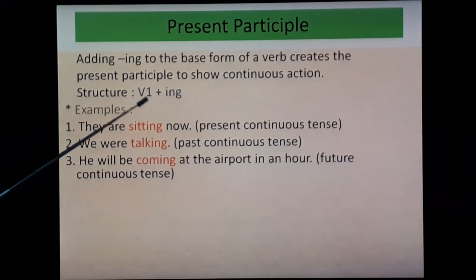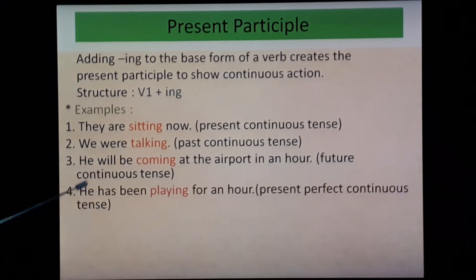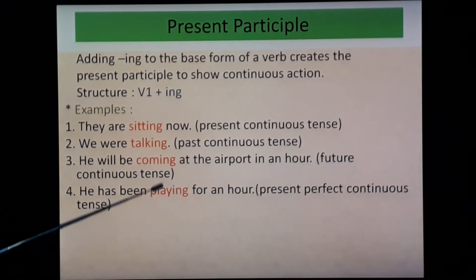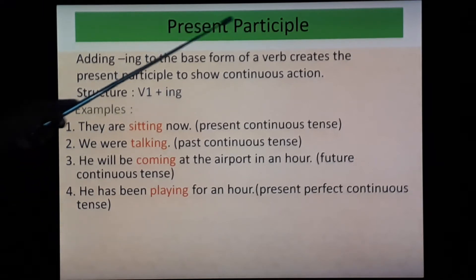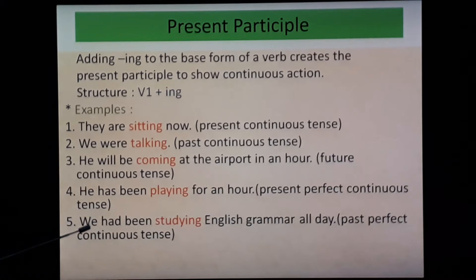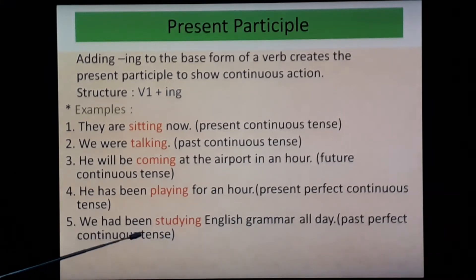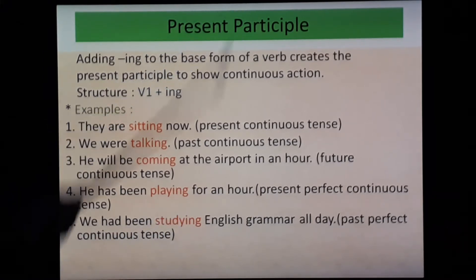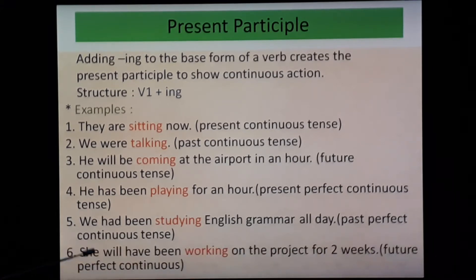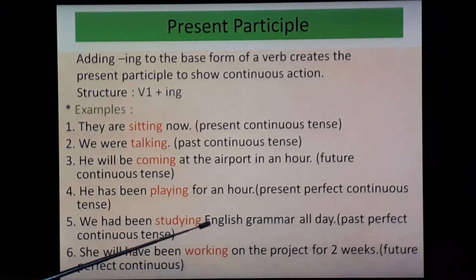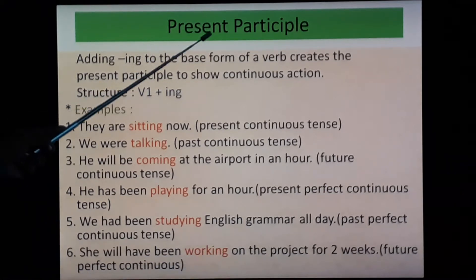'He has been playing for an hour' — present perfect continuous tense; 'playing' — play plus -ing — V1 plus -ing — is the present participle. 'We had been studying English grammar all day' — past perfect continuous tense; 'studying' — study plus -ing — is the present participle. 'She will have been working on the project for two weeks' — future perfect continuous tense; 'working' — work plus -ing — is the present participle.